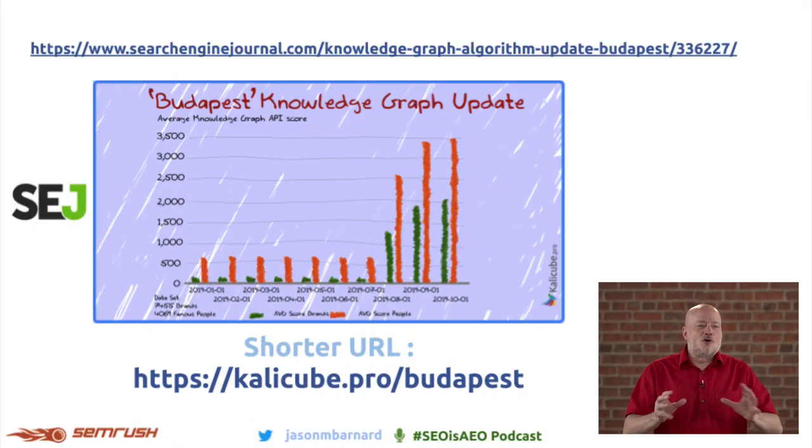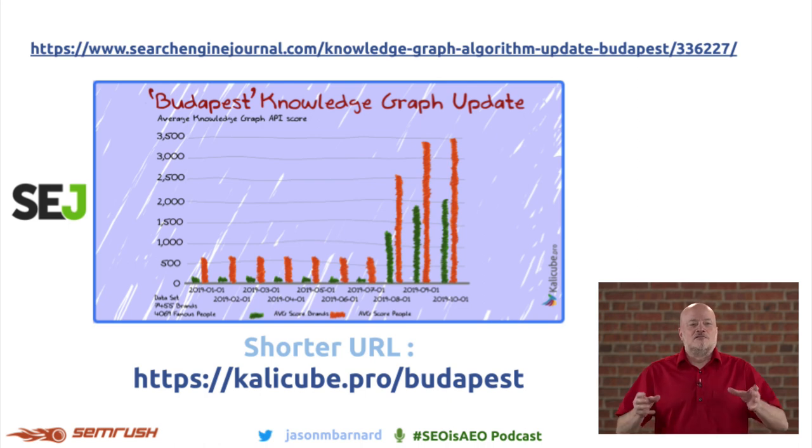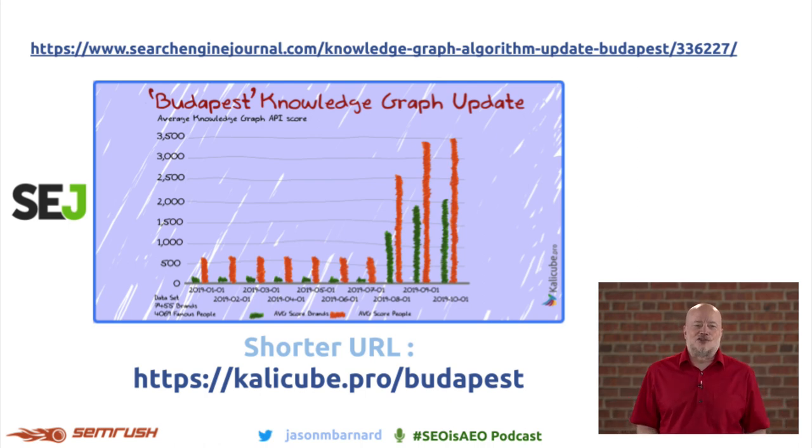Lastly, there was a huge update to the Knowledge Graph in August 2019. It appears to be a real game changer. If you want to know more about that — and you should if you're doing SEO — read this article on Search Engine Journal. Thank you. See you next time on Weekly Wisdom.